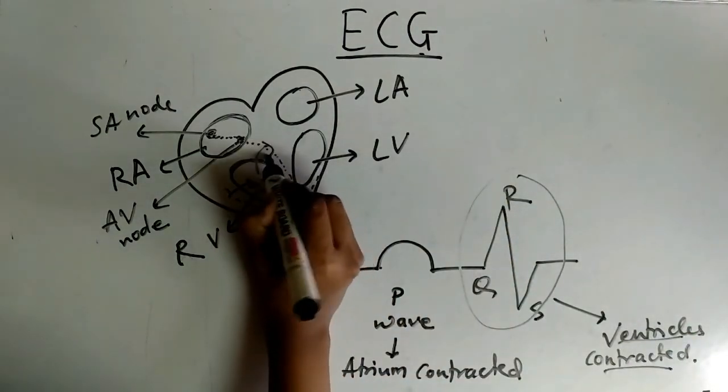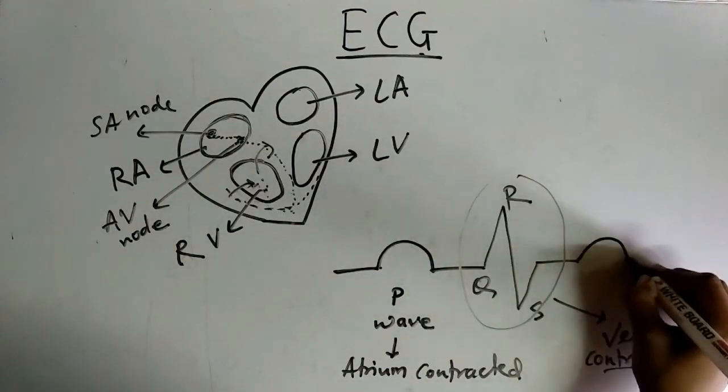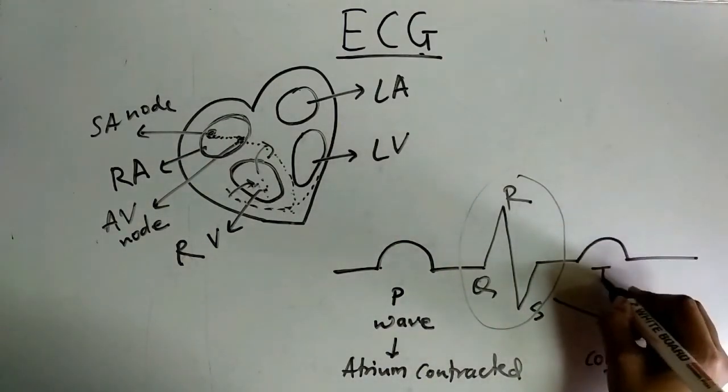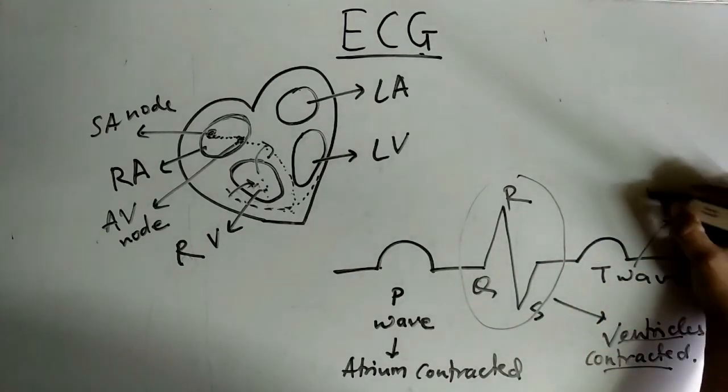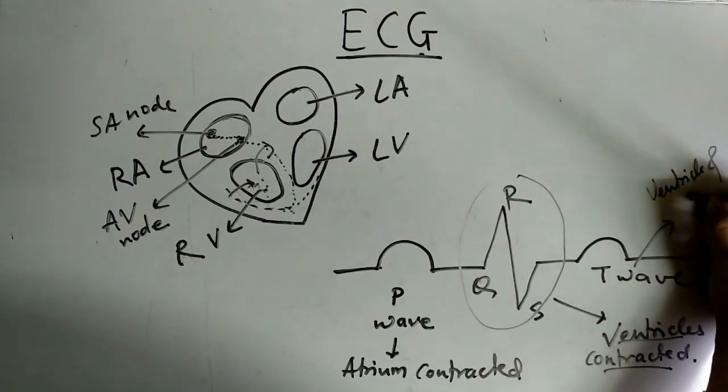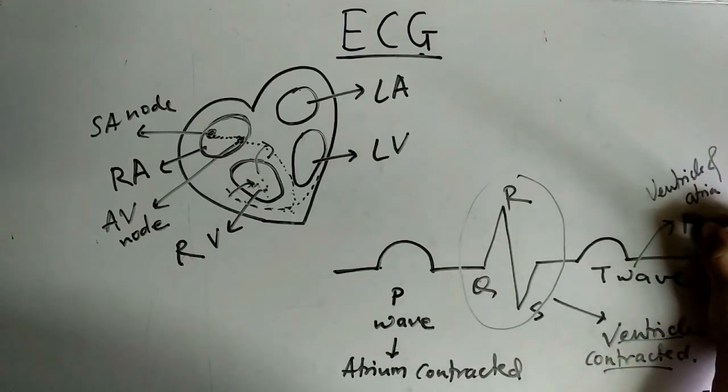Further, the ventricle releases the signals and we get T segment. This is T wave. This is because ventricle and atria get relaxed.